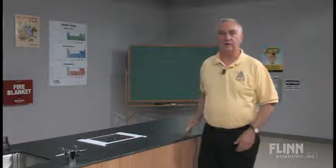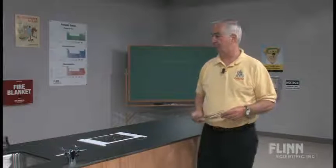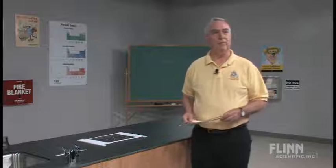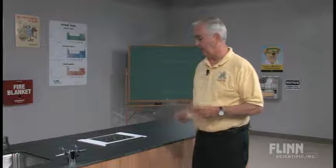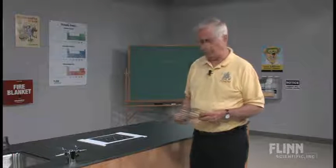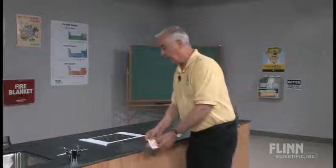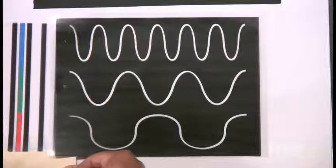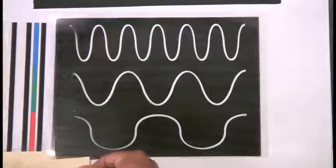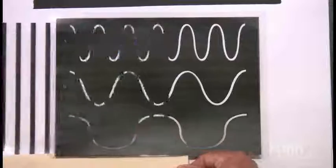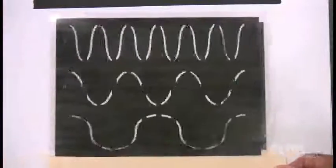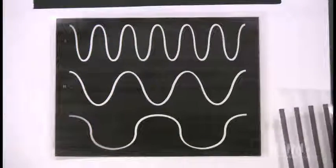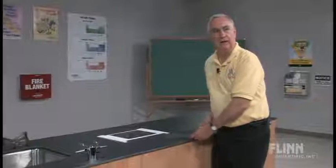A very simple device is called the wavelength generator. It goes back to the 30s and 40s, where there used to be little animation booklets where students and children would be able to flip through and see animation. What we've done here is we have created an animation to show the connection and the relationship between the frequency, and we're able to see that the colors do travel at the same time.